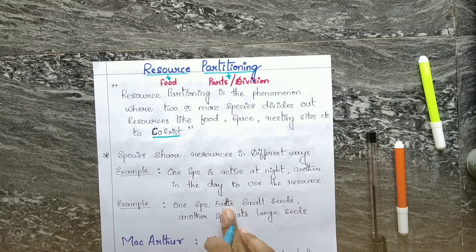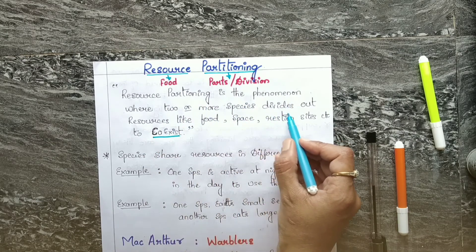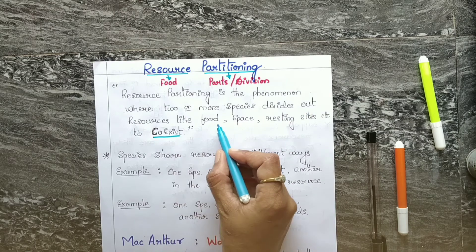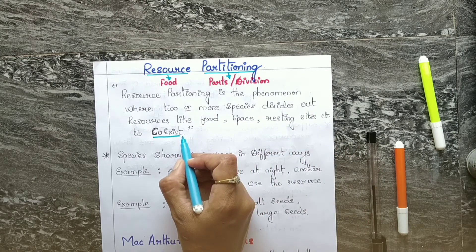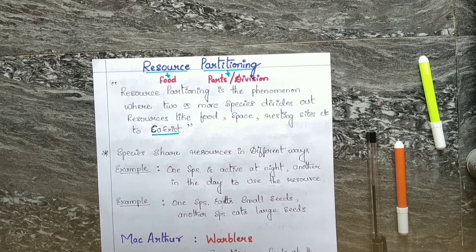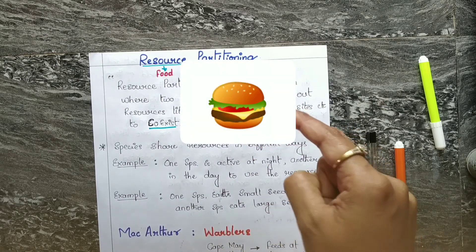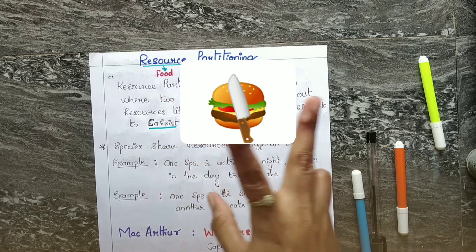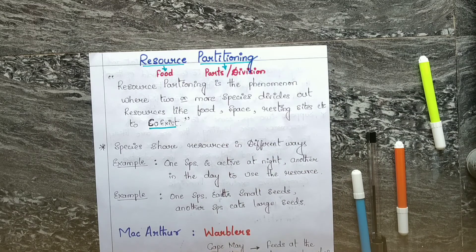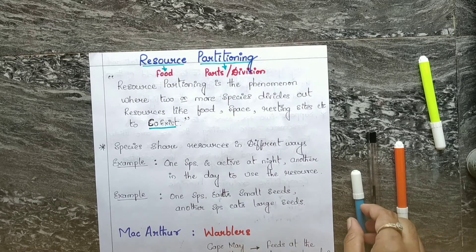I repeat once again: resource partitioning is the phenomenon where two or more species divide out resources like food, space, resting sites, etc., to co-exist. As I told before, that one burger we can divide it and distribute between the two persons. That is also possible, so they can co-exist.